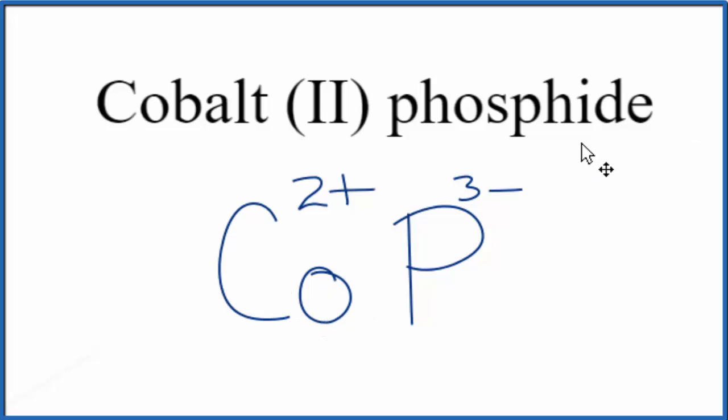Because cobalt (II) phosphide is neutral, it doesn't have the word ion out here, we need to consider the charges. They need to be balanced. We need a net charge of zero. It's a little bit difficult because we have a 2+ and a 3-. Let's use the criss-cross method to make that a little easier.